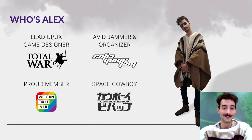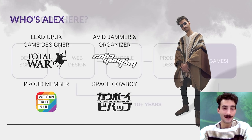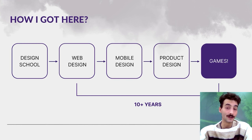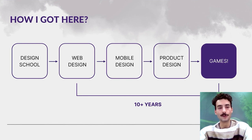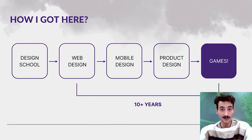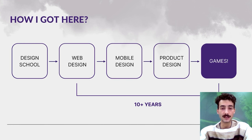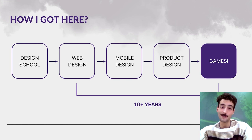I'm a huge fan of Cowboy Bebop. I had a similar way into games to Anna — I started at a design school when I was around 14, spent five years there, then immediately got my first job in web design. After a couple of years I transitioned into mobile design, then product design covering UI, UX, and features for e-commerce, online banking, and other software tools. At one point I realized none of this was making me happy, so I decided to transition to games.